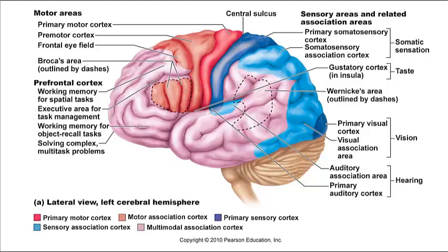Other sensory areas include the olfactory cortex, located on the medial aspect of the temporal lobe, responsible for conscious perception of odors. The gustatory cortex, located in the insula and portions of the frontal lobe, is involved in conscious perception of taste. The visceral sensory cortex, also in the insula, is involved in conscious perception of visceral sensations — for example, a full bladder or an upset stomach.